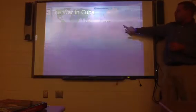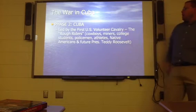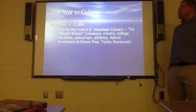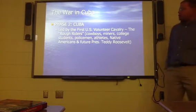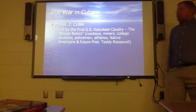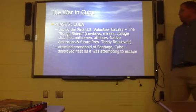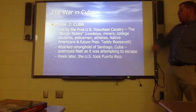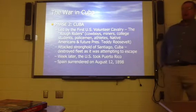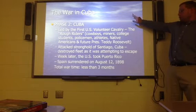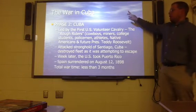That gives you an idea of where the Philippines is located. Phase two is the war in Cuba. It was led by the first U.S. volunteer cavalry, nicknamed the Rough Riders — cowboys, miners, college students, policemen, athletes, Native Americans, and future President Teddy Roosevelt. They attacked the stronghold of Santiago, Cuba and destroyed the fleet as it was attempting to escape. A week later the U.S. took Puerto Rico, and Spain surrendered on August 12, 1898. Total wartime was less than three months.